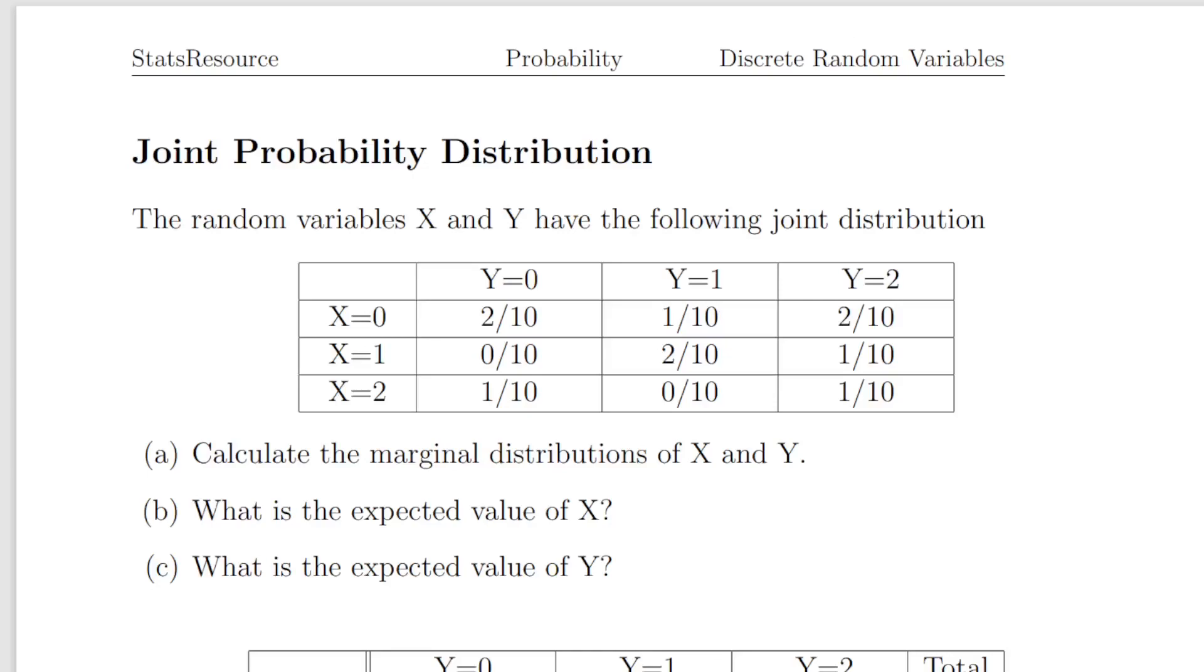In this presentation we are going to look at joint probability distributions of discrete random variables. We have two discrete random variables here, X and Y, and they have the following distribution.